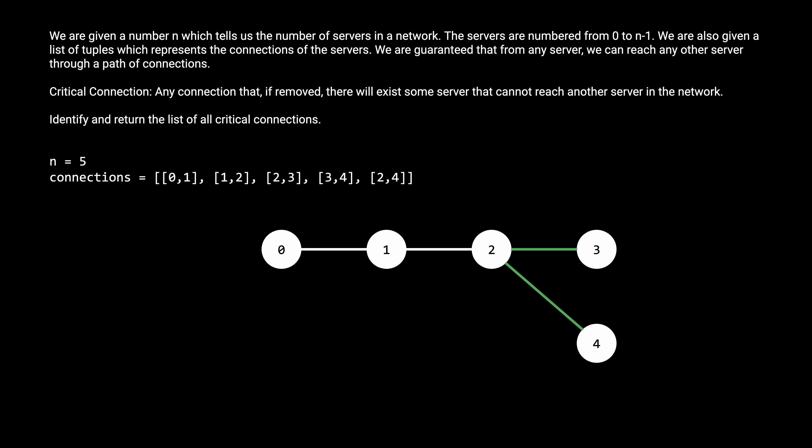For example, if I remove the connection between 3 and 4, this doesn't change the fact that from server 3 we can take the path from 3 to 2, then to 4, to reach server 4. So in this particular case, the answer we would return is [0,1] and [1,2].